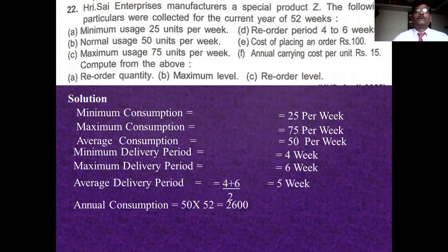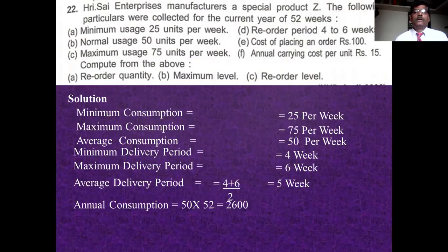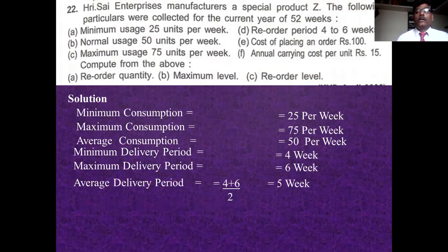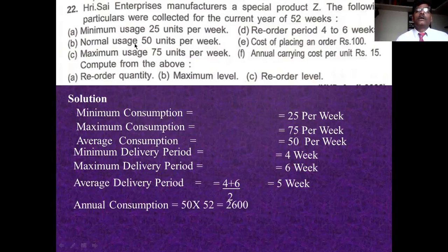Annual consumption is required for calculating EOQ — Economic Order Quantity, also called reorder quantity. Reorder quantity is the quantity you order once you place the order, which is economical to your business. Economic order quantity and reorder quantity are the same, so we require annual consumption. We consider normal weekly consumption for this calculation.